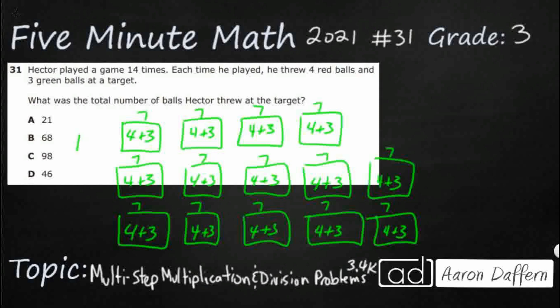So, I can just do 14 times seven. Or at least I should be able to do that. That's going to be eight. That's 28, right? So, seven times one is seven. Add that two back in is nine. So, 98, that's at least one of my answer choices.